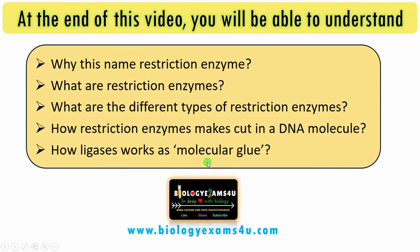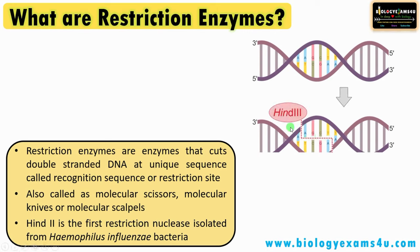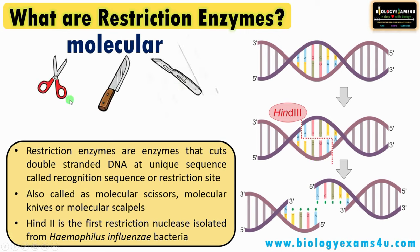At the end of this section, you will be able to understand what restriction enzymes are, the different types, how they make cuts in a DNA molecule, and how ligases work as molecular glue. Restriction enzymes are enzymes capable of making cuts in a double-stranded DNA molecule at unique sequences called recognition sequences. As they cut DNA, they are also called molecular scissors, molecular knives, and molecular scalpels. The discovery of restriction enzymes marked the beginning of recombinant DNA technology.